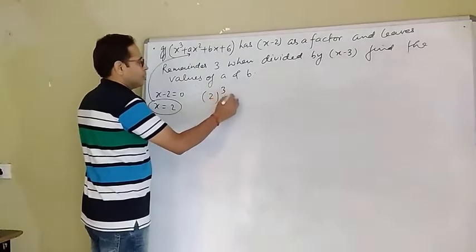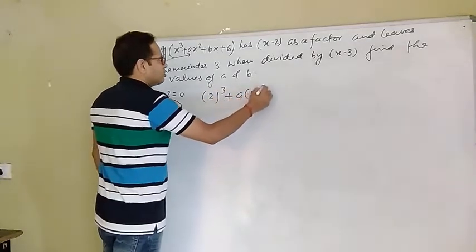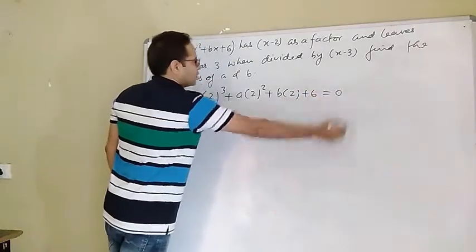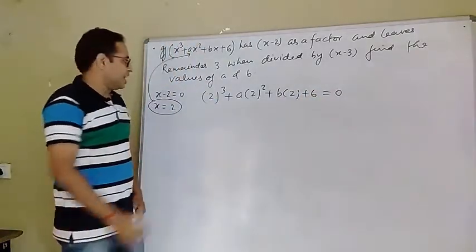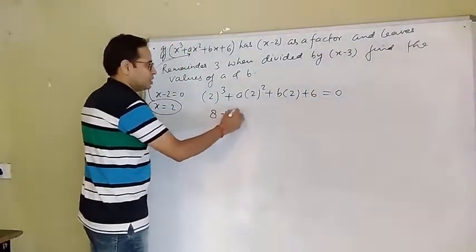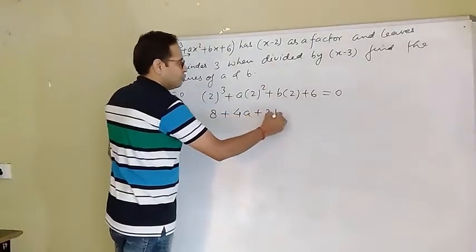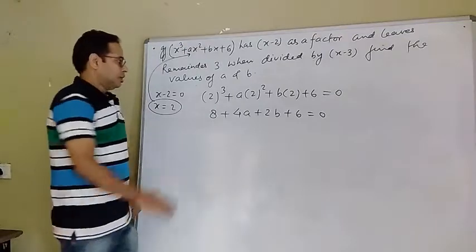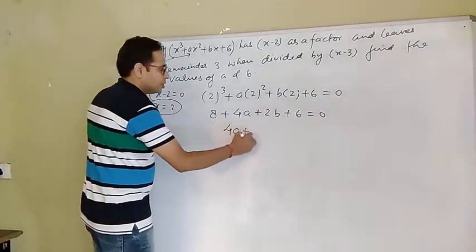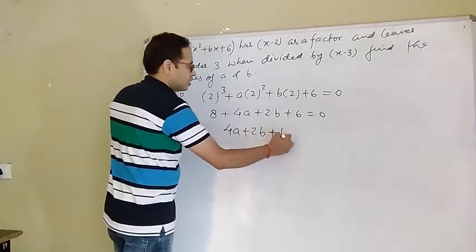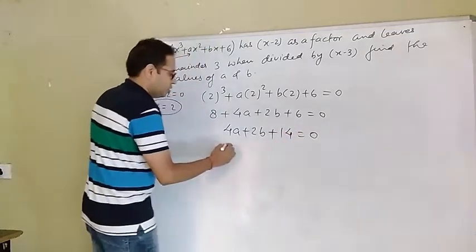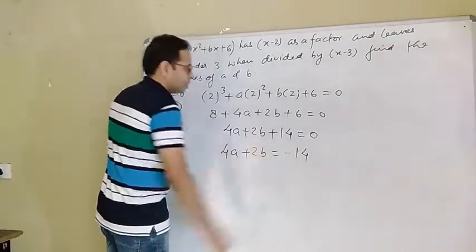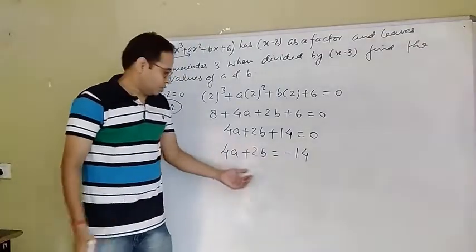So putting x = 2: 2³ + a(2²) + b(2) + 6 = 0, which gives 8 + 4a + 2b + 6 = 0, so 4a + 2b + 14 = 0, or 4a + 2b = -14.